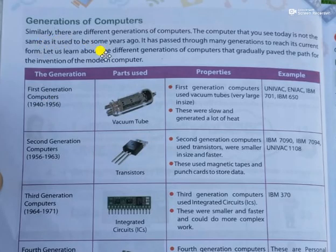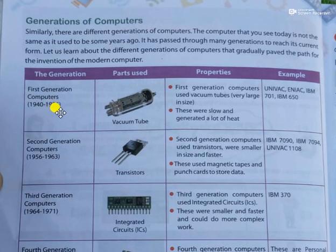Generation of computers. When we are talking about computers, after the computer designed by Charles Babbage, other machines came. We can divide those computers into five generations. In that series, the first generation comes, and those first generation computers were from 1940 to 1956. In those computers, the main part used for processing was vacuum tubes. Just like nowadays we are using microprocessors, in the time of first generation computers, vacuum tubes were used for processing.